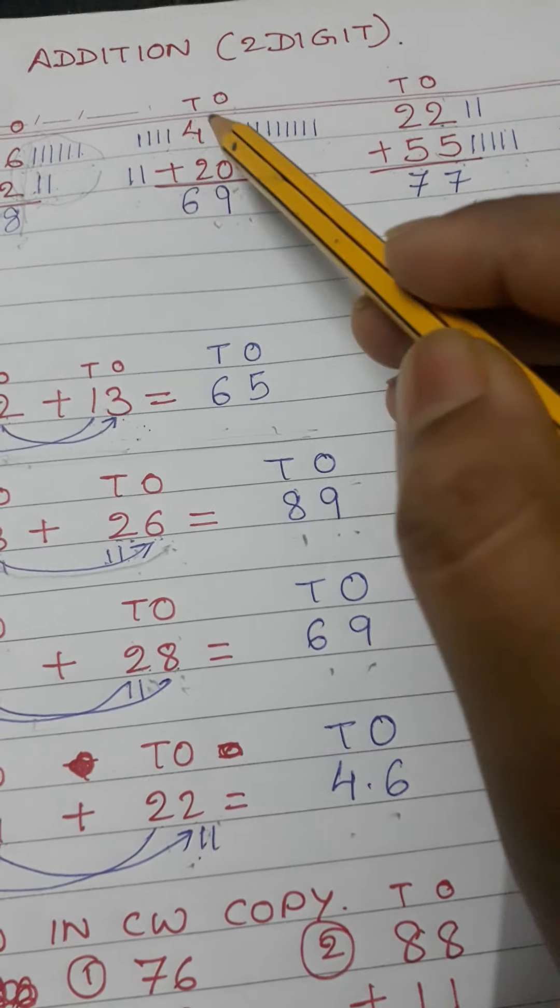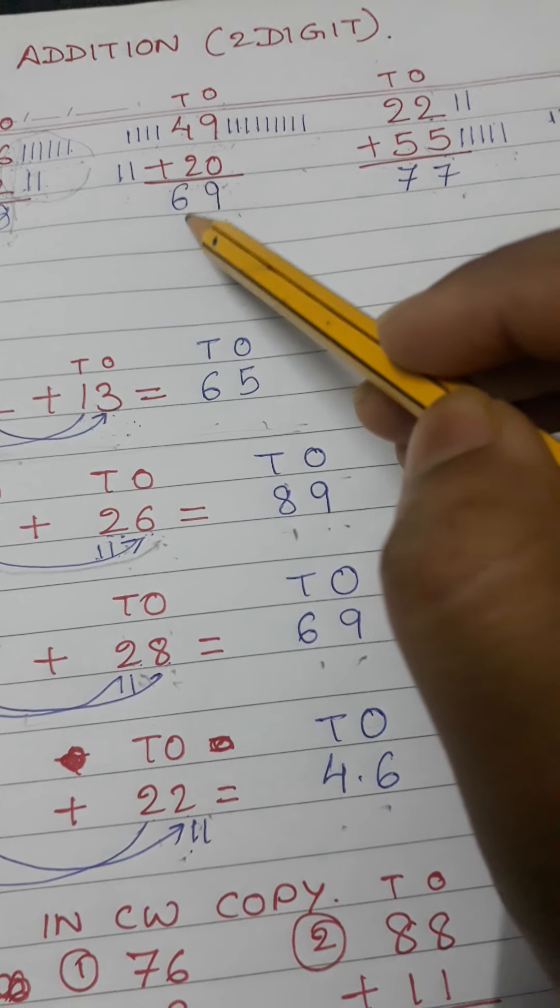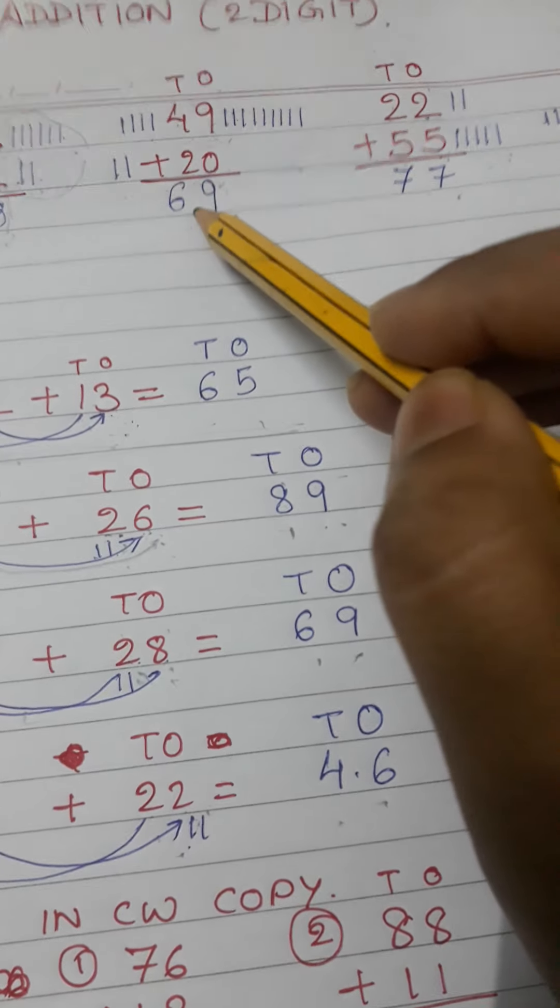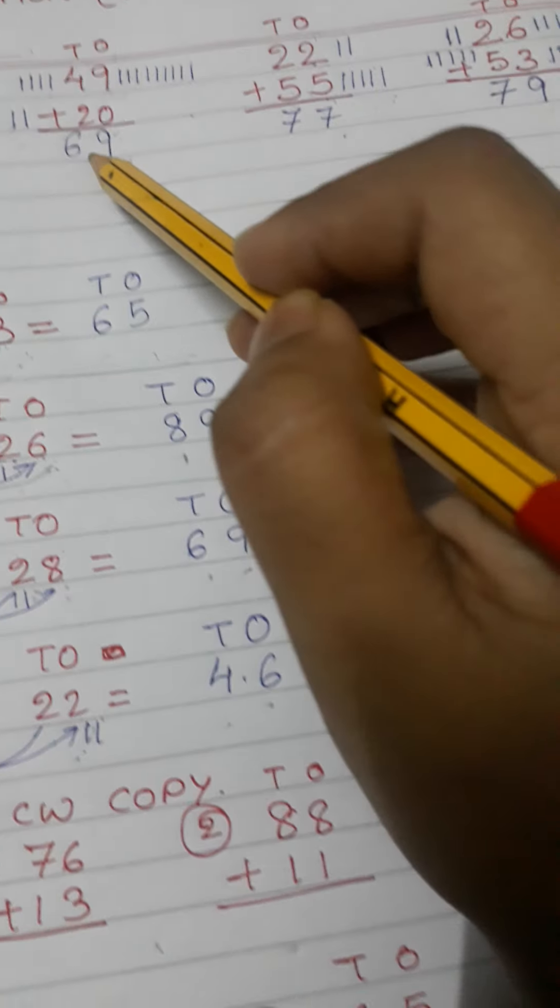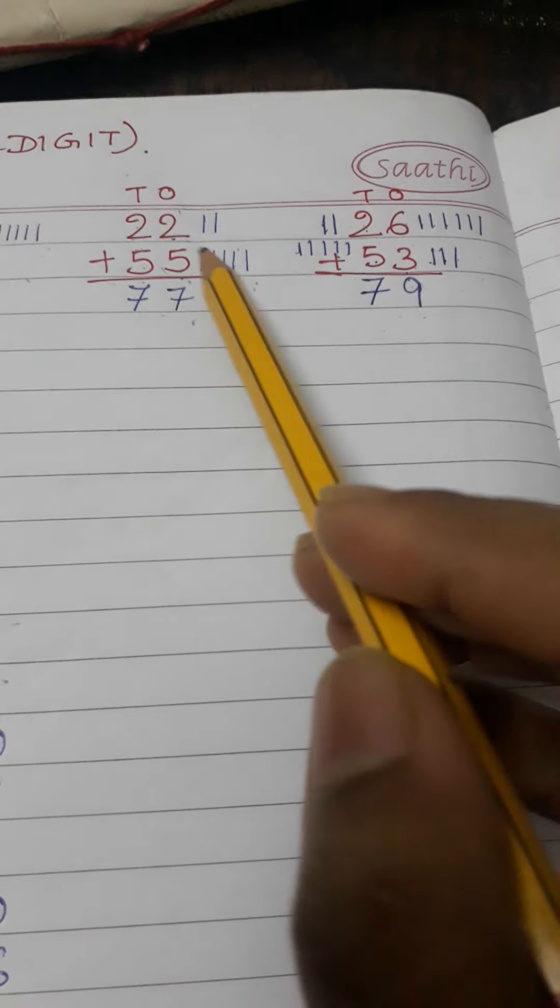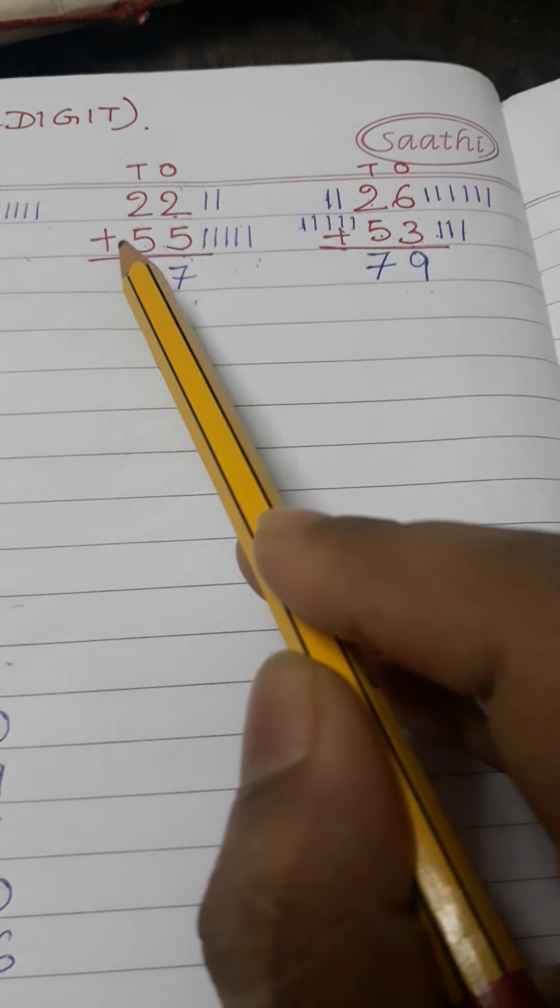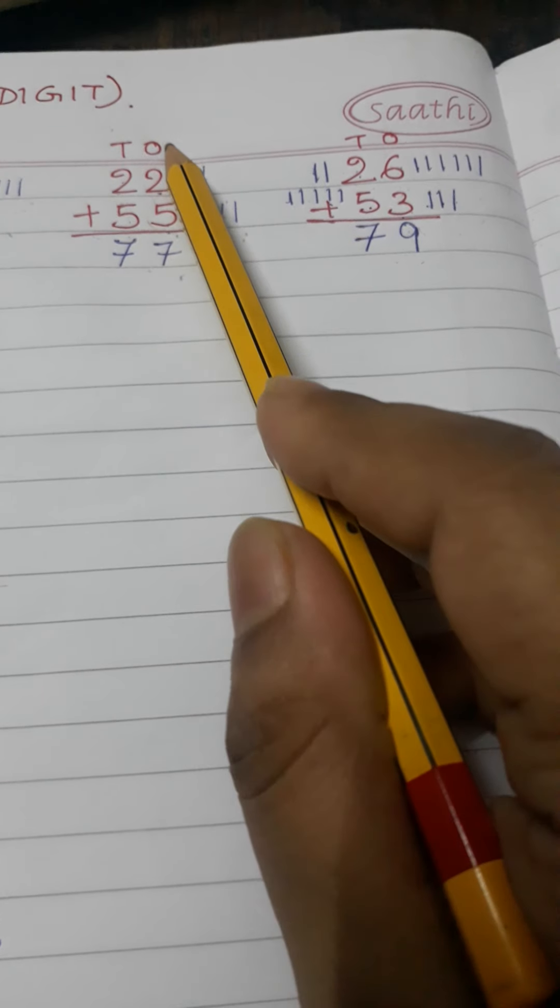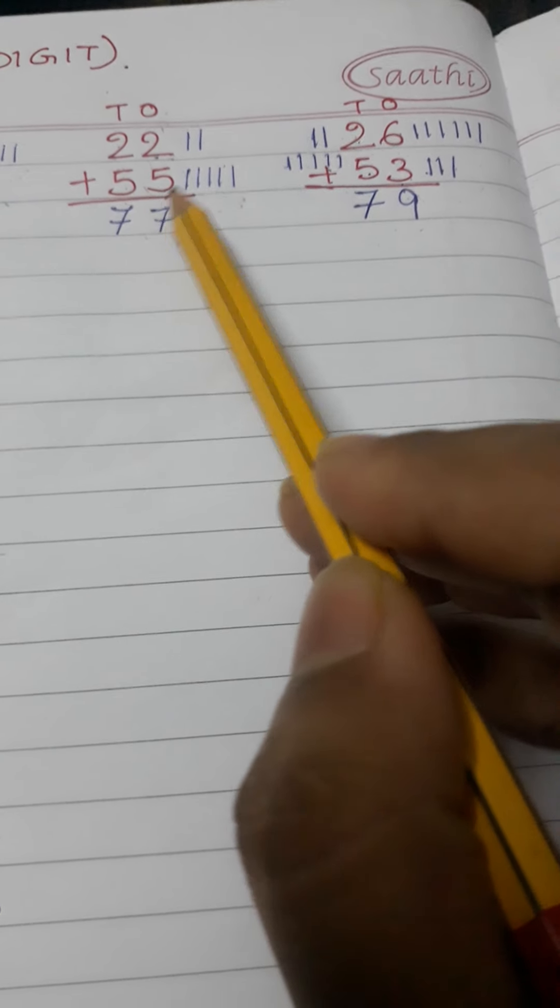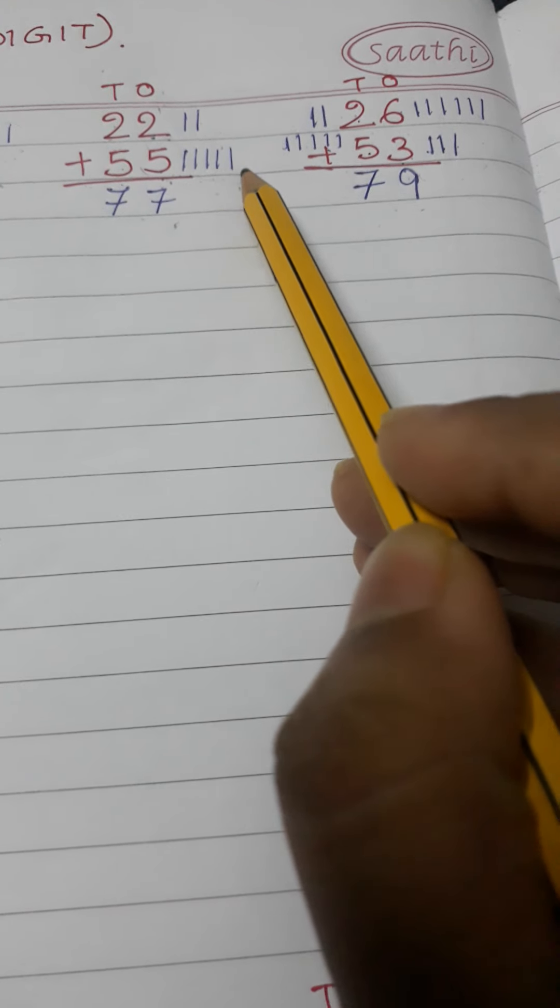Altogether six sticks are there. Next is 22 plus 55. In my ones place I have two: one, two. Five: one, two, three, four, five.